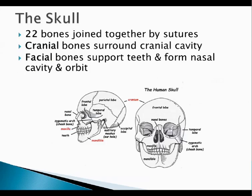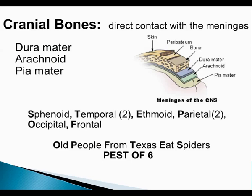So we're covering 22 bones today, splitting it into both cranial and facial, and we're going to start with cranial. Cranial bones are defined by being in direct contact with the meninges. The meninges is this kind of shrink-wrap covering around your brain. The meninges itself has three layers: the dura mater, the arachnoid mater, and the pia mater. We'll talk about that in a few weeks, but just be aware that cranial bones are defined by being in direct contact with the meninges.